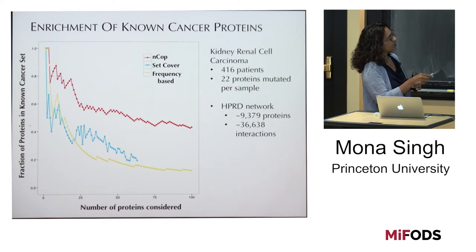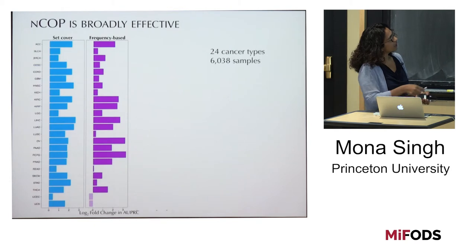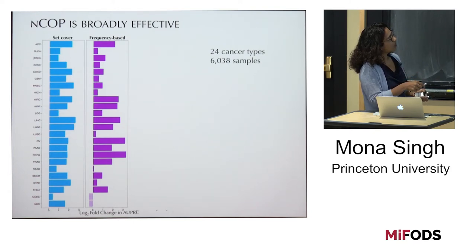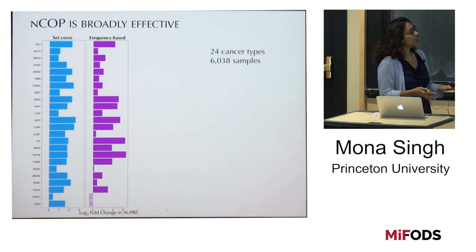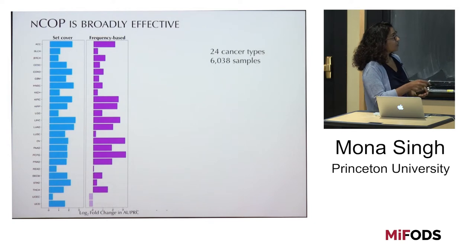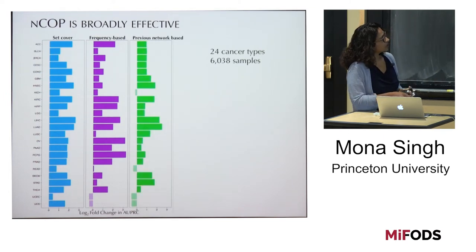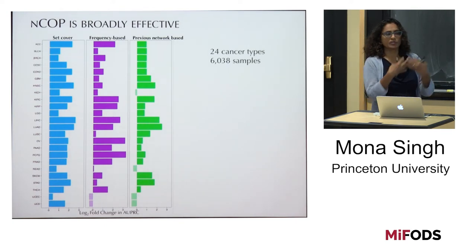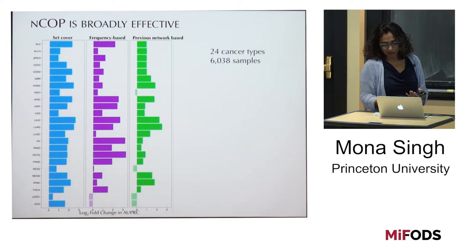We can quantify performance by looking at the area under each curve — in an ideal case, the curve would sit up high. Across 24 different cancer types and 6,000 samples, we looked at the log fold change in area comparing NCOP to set cover and to a frequency-based approach. NCOP performs better than set cover across all 24 cancer types, and better than frequency in 22 out of 24 cancers. The two cases where it does less well correspond to cases where very few genes sufficed. We also compared to a previous network-based method to show that the right formulation matters, not just using networks in general.